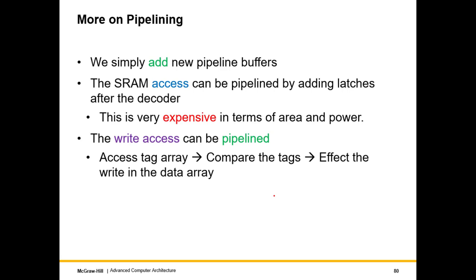For a write operation, we access the tag array, then compare the tags, and affect the write in the data array. If we have a read and write to the same address, some forwarding will be required, so that forwarding logic needs to be added. We can further add more pipeline stages.